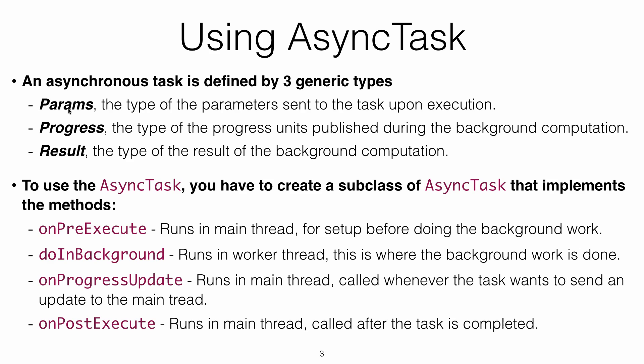The second generic type is the Progress type. If the background task wants to update the main thread with its progress, what type will it send — strings, integers? If it won't send anything, it will be void. Finally, there is the Result type — the background thread works on something and generates a result, so you define what type that result will be.